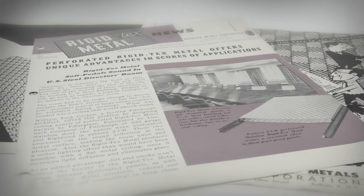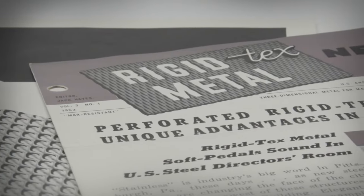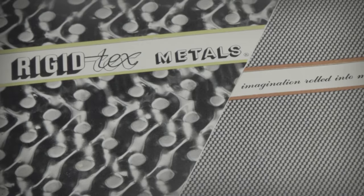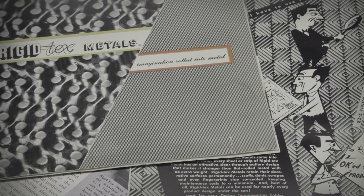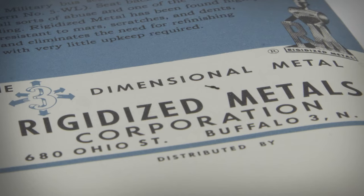Originally Rigidized was called Rigid Tex. My grandfather could see that the rigidizing process made it more rigid and it also had a texture so that's how he became Rigid Tex in the beginning and then in the late 40s he decided that the verb would be better and so Rigidized became the company name.